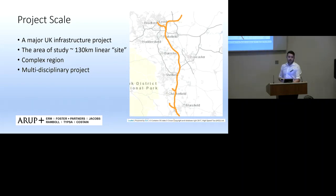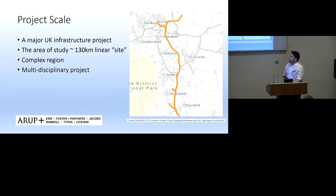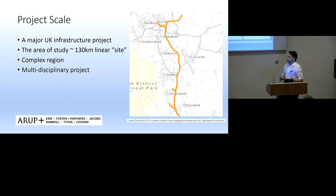The project is HS2-2B - the eastern leg running from Tamworth up the eastern side towards Sheffield and Leeds. As everyone probably knows, it's one of the biggest infrastructure projects in the UK. The site is defined as a 130-kilometre linear site, though it's much wider because earthworks alone can extend for tens of metres each side. It goes through a complex region, both geologically and historically, predominantly through coal measures - lower, middle and upper - a little bit of Permian, and along with the coal measures, a rich history of mining.